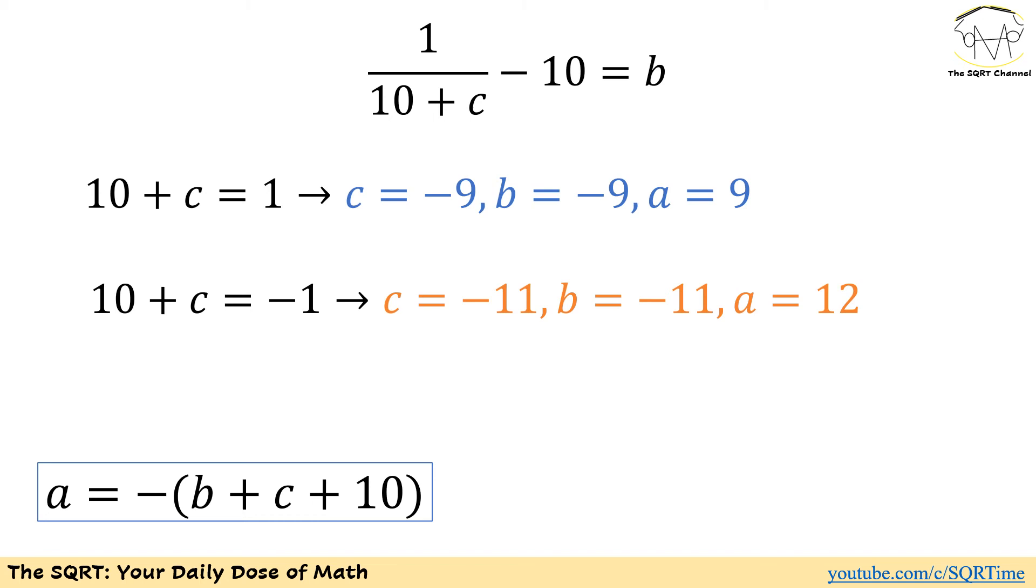Now there is an interesting perspective here. I have 1/(10 + c). Remember, a, b, and c are integers. To be able to have b as integers, I need to have 10 + c as 1 or -1. If 10 + c is 1, c is going to be -9. And if 10 + c is -1, c is going to be -11.